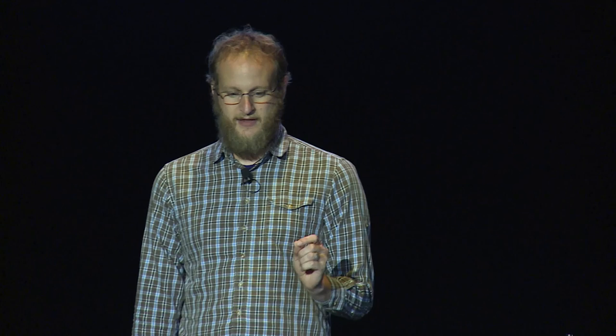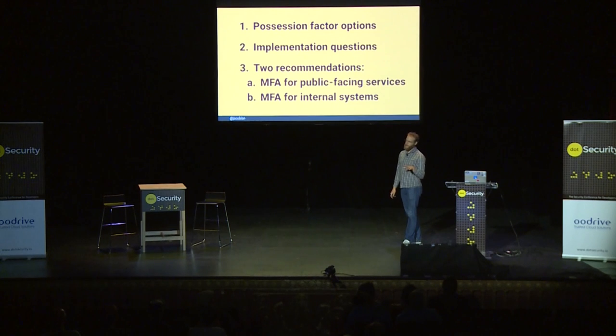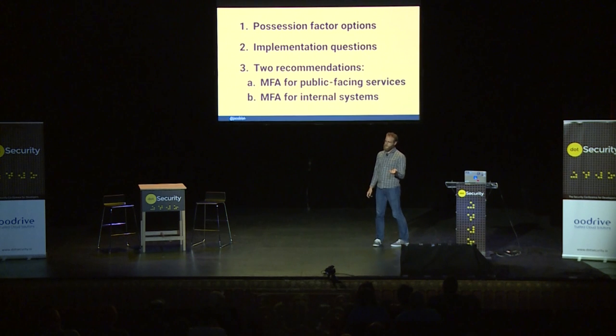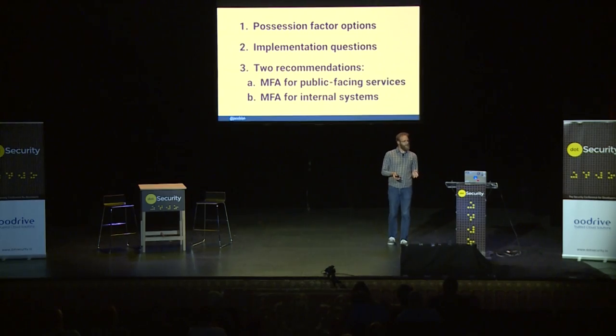In terms of the first implementation, if you're just getting started, you're probably thinking about possession factors — things you have. A phone, a hard token, something you have physically as opposed to a password, which is something you know, something you memorize. I'm going to give you an overview of the various options for possession factors, lay out some questions you should ask when implementing multi-factor authentication, and then give you my recommendations on best practices for implementing MFA on your systems.